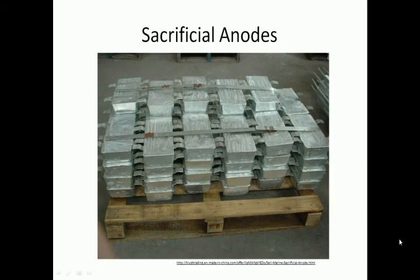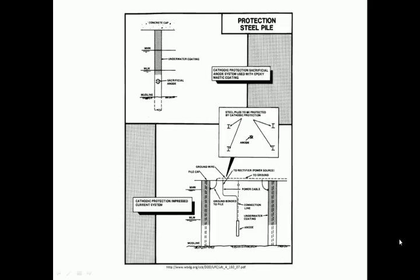Sacrificial anodes are made in many different shapes and sizes. A rectangular anode is the most commonly used shape in marine structures. The sacrificial anode can be fastened directly to the steel structure that is to be protected. An impressed current system is more complicated and may be more prone to problems due to the combination of water and electricity.